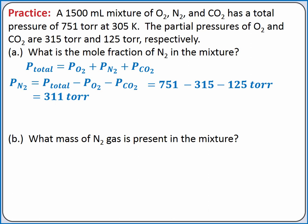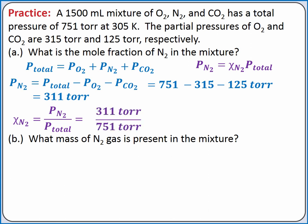Next, we can use our equation for the partial pressure of a gas within a mixture. The partial pressure of nitrogen is equal to the mole fraction of nitrogen times the total pressure. We can rearrange this equation to solve for the mole fraction of nitrogen. Substituting in our values and completing the calculation, we get 0.414.